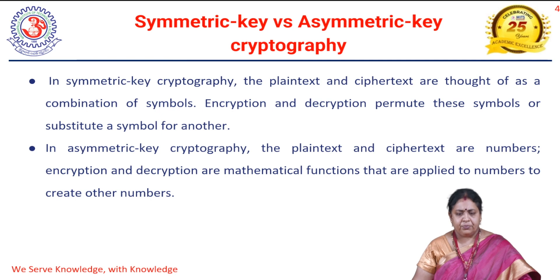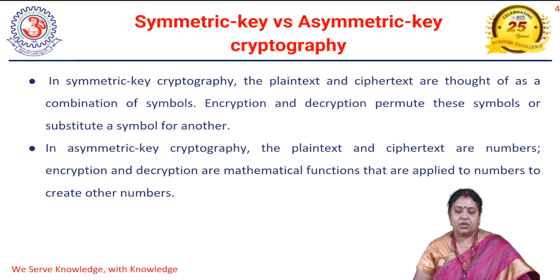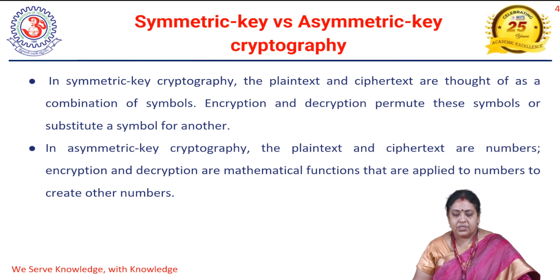In symmetric cryptography, the plain text and cipher text are thought of as a combination of symbols — characters or bits — and encryption and decryption are applied on those symbols by permutating or substituting, or performing both. Whereas in asymmetric cryptography, the plain text and cipher text are treated as numbers, and we use mathematical functions to convert them.